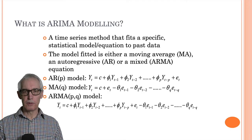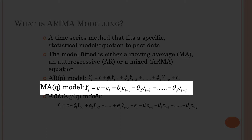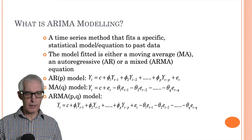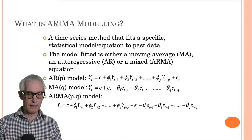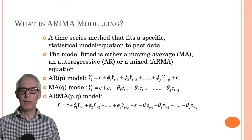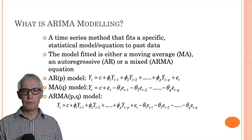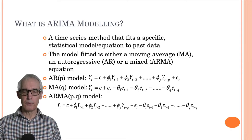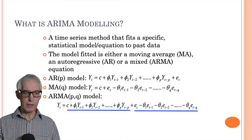A moving average model models the current value on a weighted average of past errors. In an MA(q) model, the current value yt depends upon the current error et, one period back et minus one, and so on. It's a linear relationship, so we have to estimate c and the various thetas, theta one to theta q. Putting the two together, we have an ARMA model with both an autoregressive element and a moving average element.